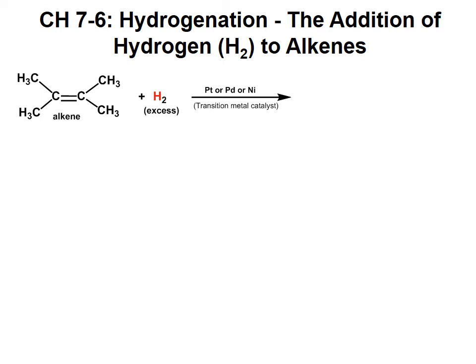Hi folks, this is audio lecture 7-6. The topic is going to be hydrogenation, the addition of hydrogen to alkenes. This is a new reaction. We're going to be focusing only on the reaction — in other words, predicting what the products look like. And since this is a stereospecific reaction, we're going to be looking at the stereochemistry. This starts our transition from addition reactions to alkyl halides and elimination reactions that produce alkenes, to looking at reactions of alkenes, leading us into chapter 8.